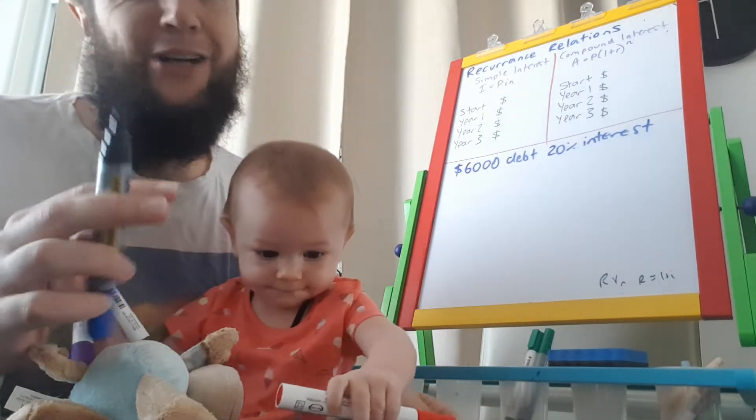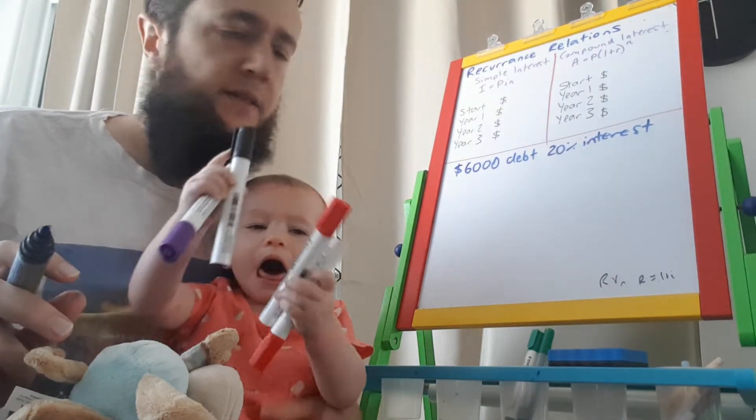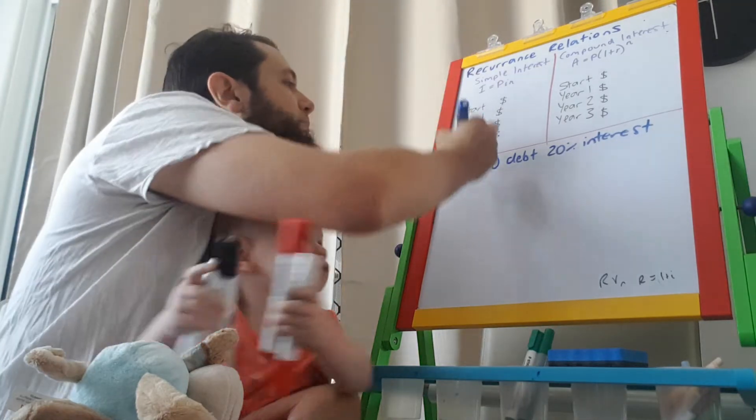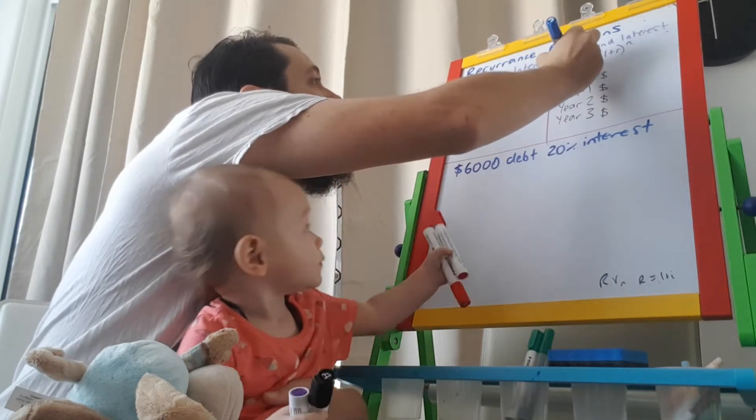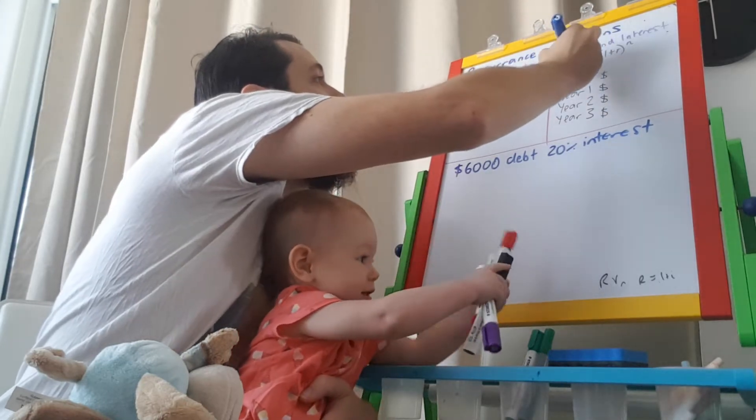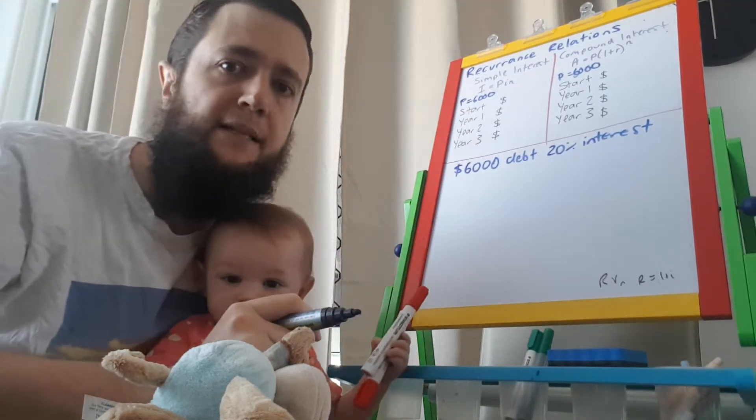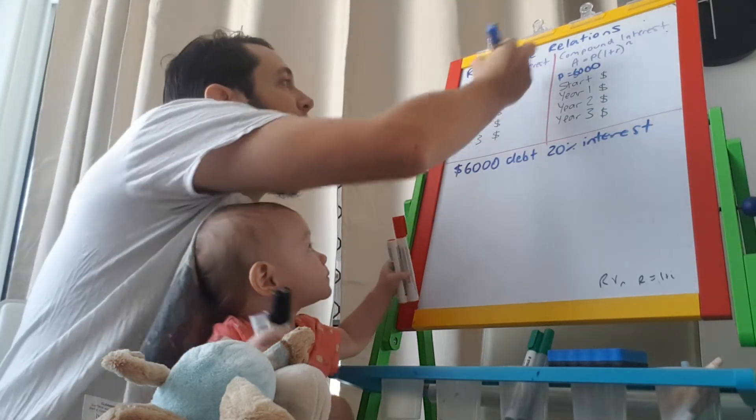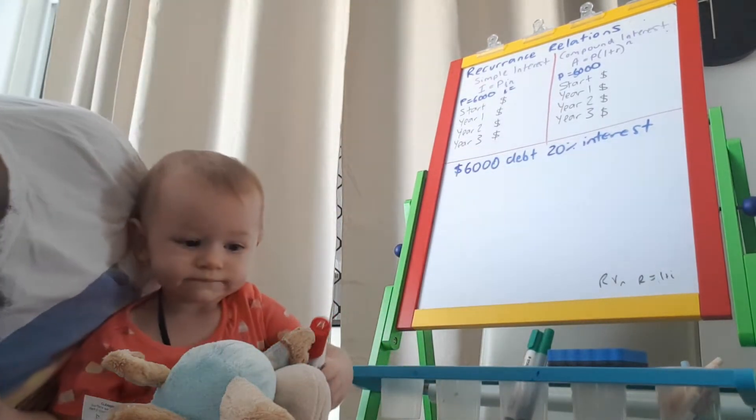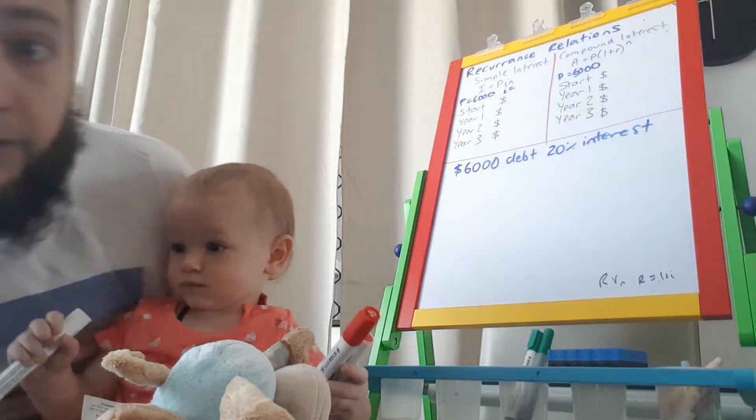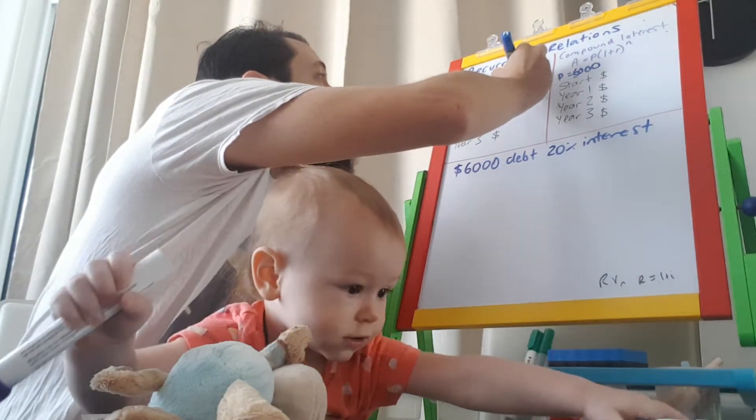Now let's have a go at that. I've written here the simple interest formula. I've written here the compound interest formula. So P is your initial value, so in both cases P is 6,000. R, I and R in these formulas are both interest rate but it has to be as a decimal so you need to divide by 100. So in both cases I, if you get 20 and divide it by 100, you can write it as a fraction.